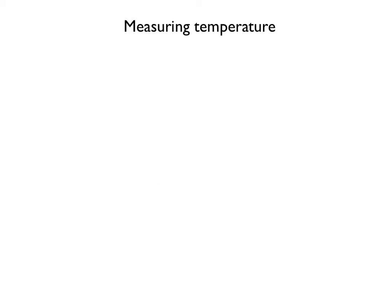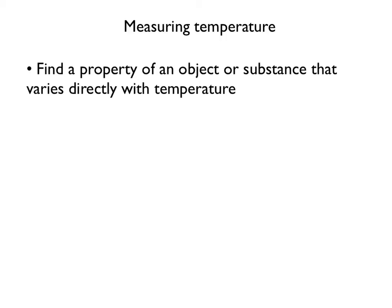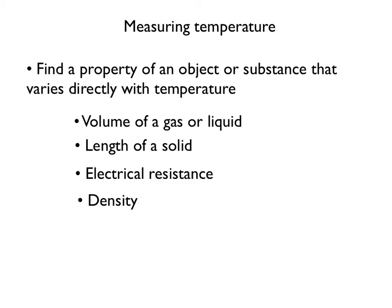Measuring temperature. It turns out that it's not possible to directly measure the temperature of an object. So what can we do? If we can find a property of an object or substance that varies directly with temperature, then we can measure that. Fortunately, there are a number of such properties. Some of them are the volume of a gas or liquid, the length of a solid, electrical resistance, or the density of an object. All of these vary directly with the temperature of an object.